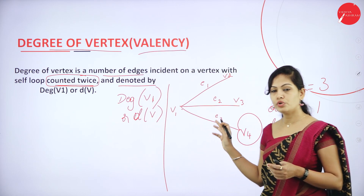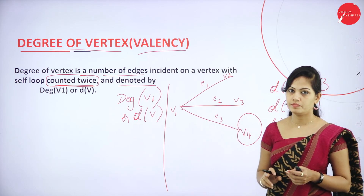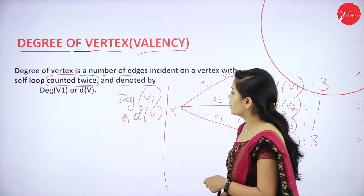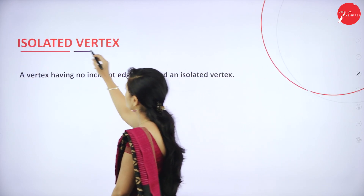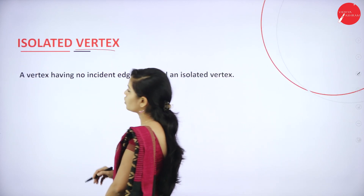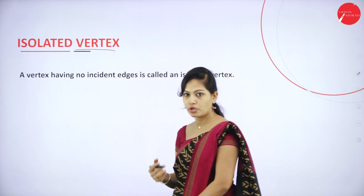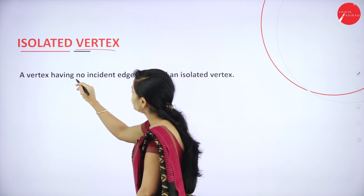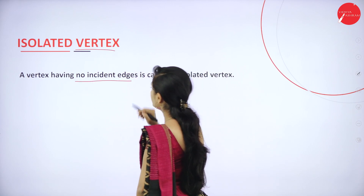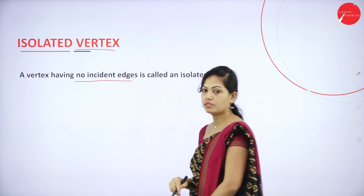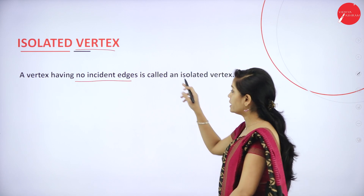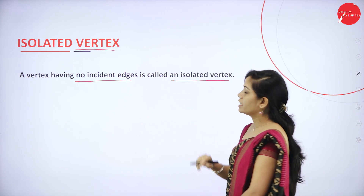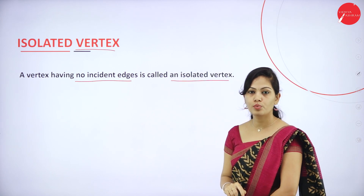The degree of vertex is denoted by D(V). Next is isolated vertex. A vertex having no incident edges is called an isolated vertex.